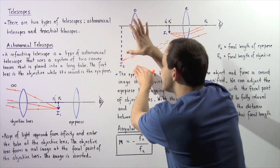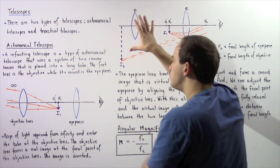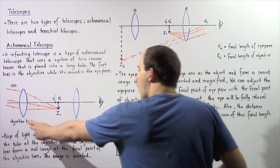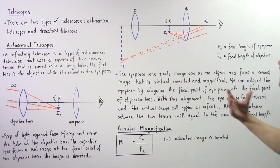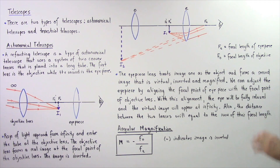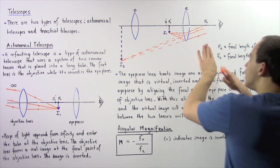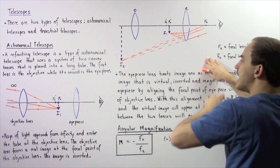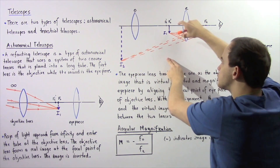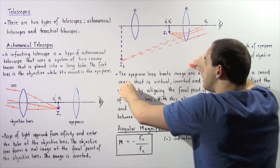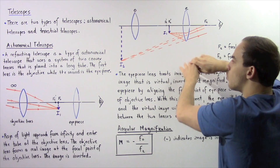The eye sees this image as if it were the actual object. The eyepiece lens treats image one, formed by the objective lens, as the object, and forms a second image that is virtual, inverted, and magnified. It's virtual because it's found to the left of the eyepiece lens, and it's inverted because it points in the opposite direction to the original object.